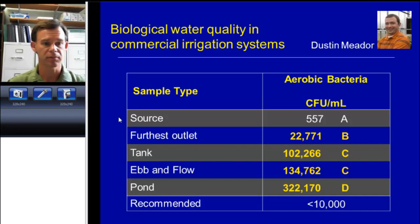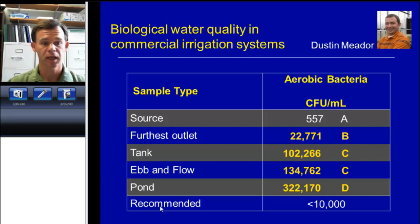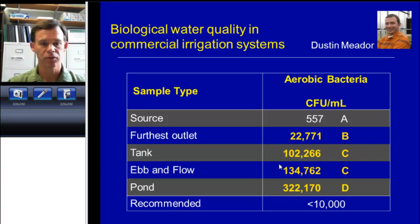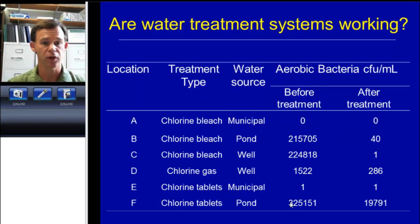He sampled at different points in the irrigation system: at the source — whether that was a municipal supplier, well, furthest outlet away from the source — concrete lined and covered tanks such as in sub-irrigation systems, even flow benches and floors inside greenhouses, and catchment basins or ponds. The recommended level for aerobic bacteria in irrigation water for use in drip irrigation systems is around 10,000 colony forming units per milliliter or less. As you can see, as we go through the different points in the irrigation system, we have very high microbial load levels in our tank, ebb and flow, and pond. That indicates the need for treatment. Also, the difference between the source and the furthest outlet is an indication of biofilm development inside the irrigation line.